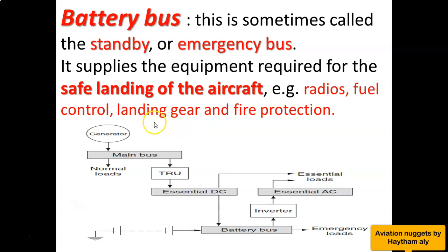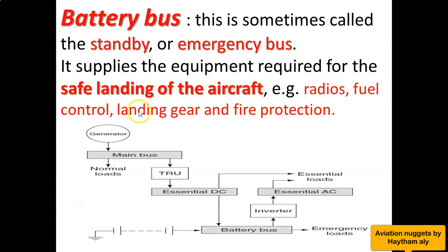And finally, what is the most important bus, or the highest rank bus? It is the battery bus, also called the standby or emergency bus. It is so important because it supplies emergency loads that are needed for the safe landing of the aircraft. The battery bus supplies the equipment required for the safe landing of the aircraft — for example, radios, fuel control, landing gear, and fire protection.